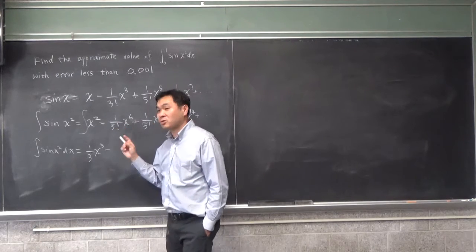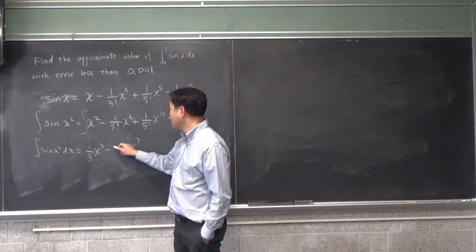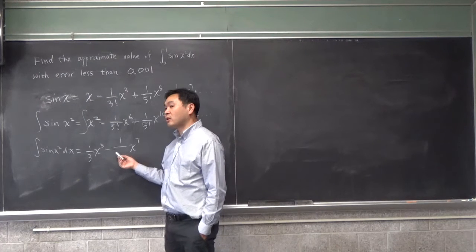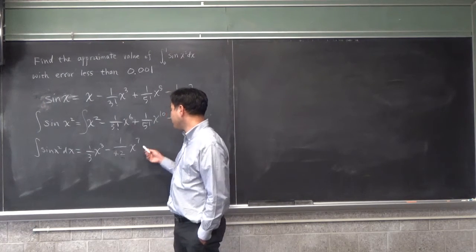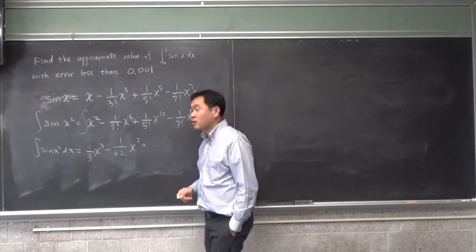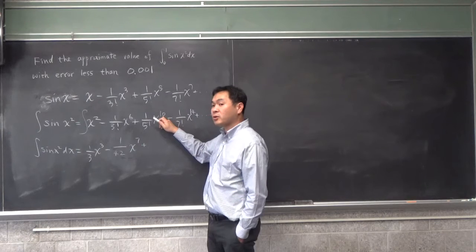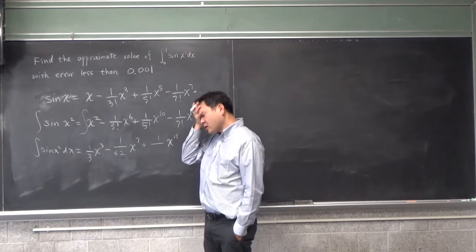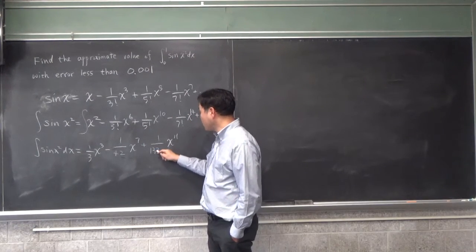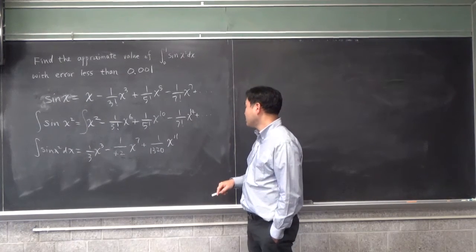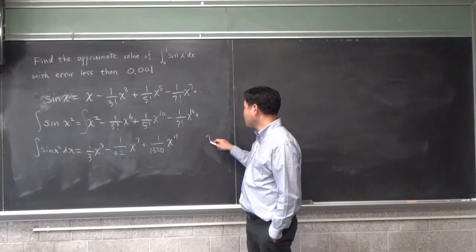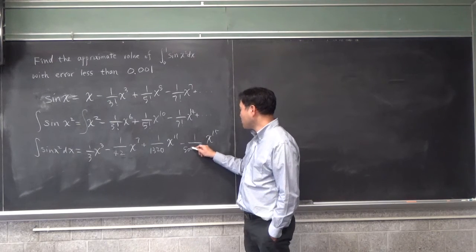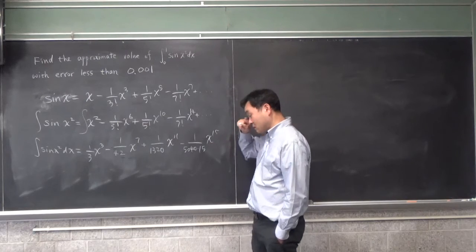Now, 3 factorial is 6. If you integrate x⁶ as x⁷, you need to put the reciprocal of 7, which is 1/7. 1/7 times 1/6 is 1 over 42. 5 factorial is 120. If you integrate x¹⁰, that's x¹¹, and you do 11 times 120, that will be 1320. And then this one will be x¹⁵. I know that 7 factorial is 5040, but then you multiply by 15, so it's a big number here.